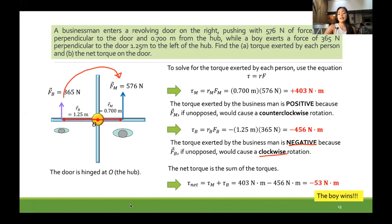And the net torque, of course, a negative value for the boy and a positive value for the businessman. And we have the same answer: negative 53 newton meter. So the boy will win.